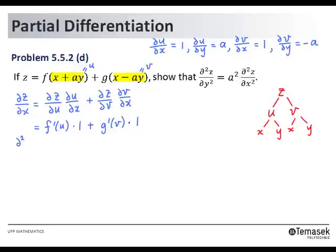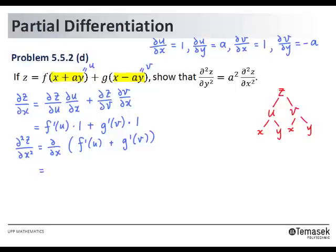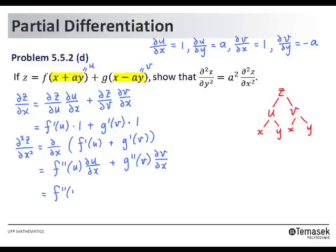Next, the second derivative of z with respect to x. This is the partial derivative of f prime u plus g prime v. Differentiating f prime u with respect to x, we get f double prime u times partial u partial x plus g double prime v times partial v partial x. This simplifies to f double prime u times 1 plus g double prime v times 1.